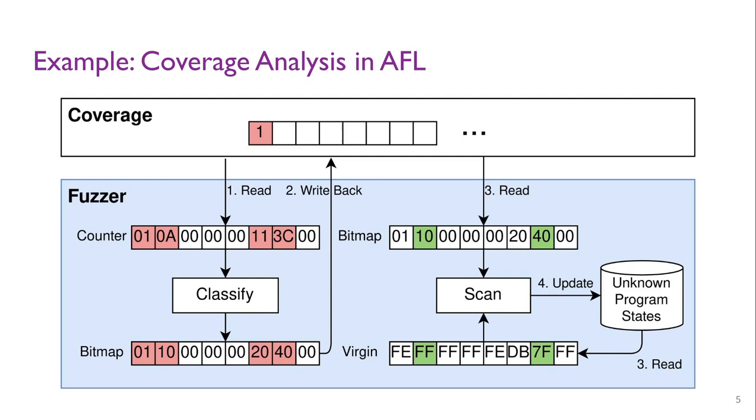With the edge transfer counts classified as a bitmap, AFL scans the database of known program states to detect new program behaviors. If a previously unknown edge transfer is triggered, then the input will be labeled as new coverage. If a known edge transfer has different features, then it will be marked as a new path. Otherwise, the current input is discarded. After the scan, AFL removes the newly discovered features by updating the database.